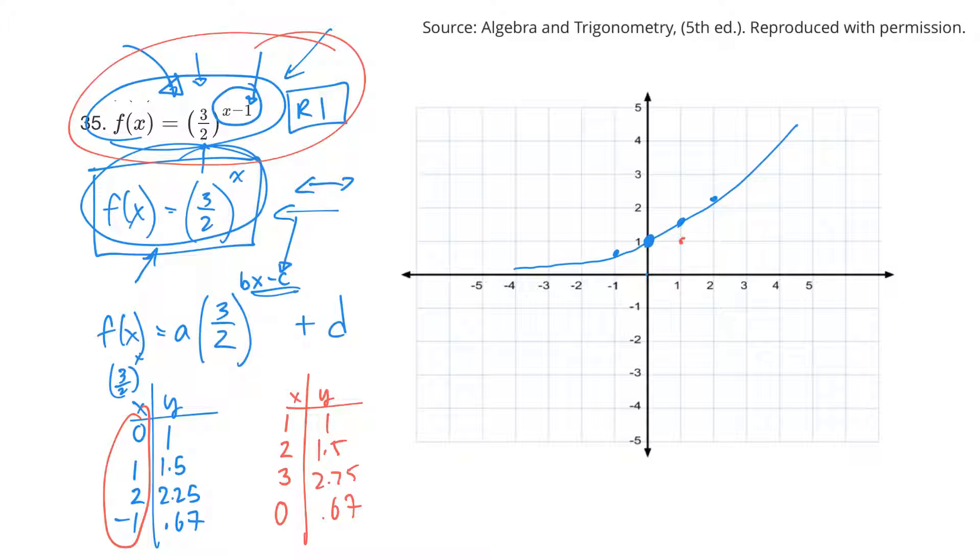So 1, 1 would be there. 2 and 1.5 would be about there. See how it's sort of falling? 3 and 2.25 would be there. 0 and 0.67 would be about there. And so this graph is going to look something like that. All right. Hopefully that helps you with that one.